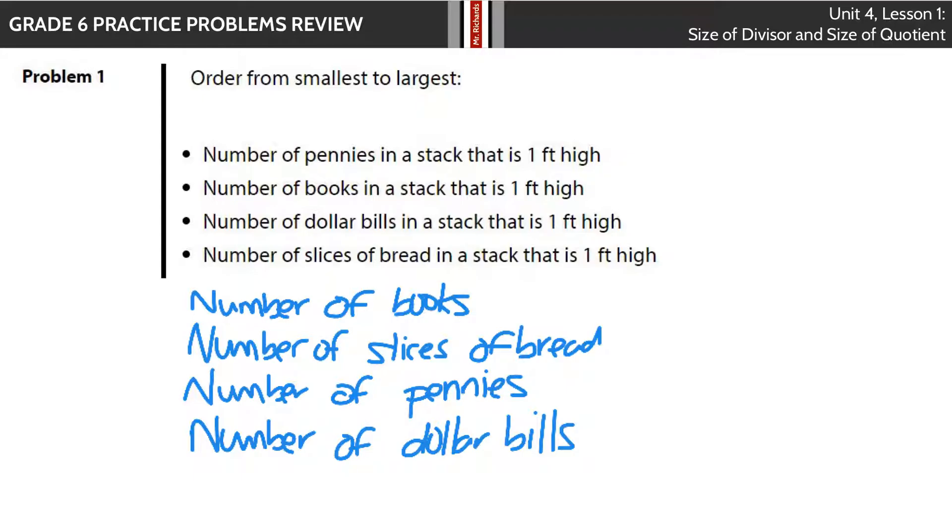In Problem 1, order from smallest to largest. Notice all of these are 1 foot high, whether it's number of pennies, number of books, number of dollar bills, or number of slices of bread. When you're trying to order from smallest to largest, the number of books will be the least amount because a book is the thickest item. Next comes the bread, then the pennies, then the dollar bills. So going books, then bread, then pennies, then dollar bills will get you your answer.